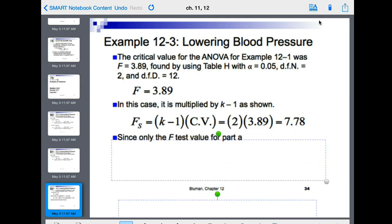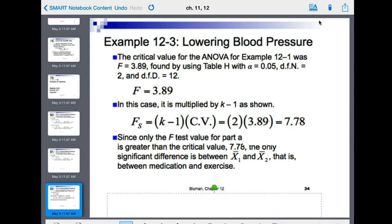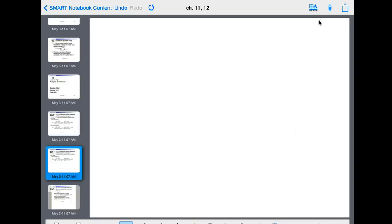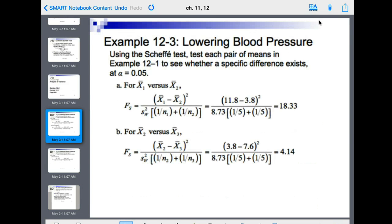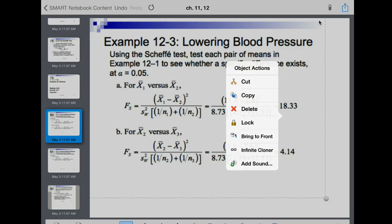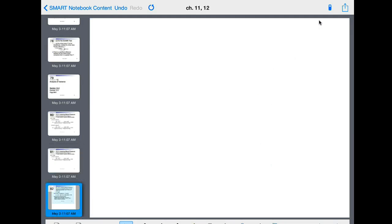Now, since the only F test for part A is greater than the critical value, 7.78, the only significant difference is between X1 and X2, that is medication and exercise. So in other words, the only big difference between the means is medication and exercise. Yeah, 18.33. So that one's bigger than that critical value. So therefore, that's the only significant difference.